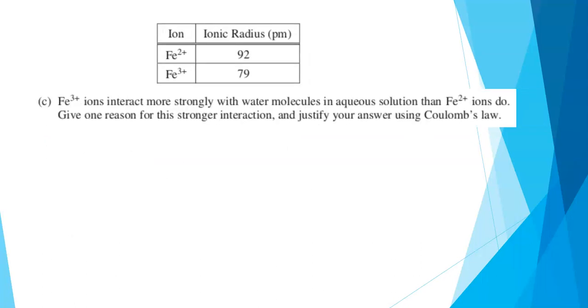Iron 3 ions interact more strongly with water molecules in aqueous solution than iron 2 ions do. Give one reason for the stronger interaction and justify your answer using Coulomb's law. This question was also scored out at one point. And Coulomb's law is a way of talking about the strength of interactions here between an ion and a polar molecule. There are two main factors that affect the strength of a Coulombic attraction. One is the magnitude of the charge. When the charge goes up, the strength of the attraction increases. We don't have to write out Coulomb's law or the formula to do this. We can explain it all conceptually, but we do need to have something with some math-based reasoning.